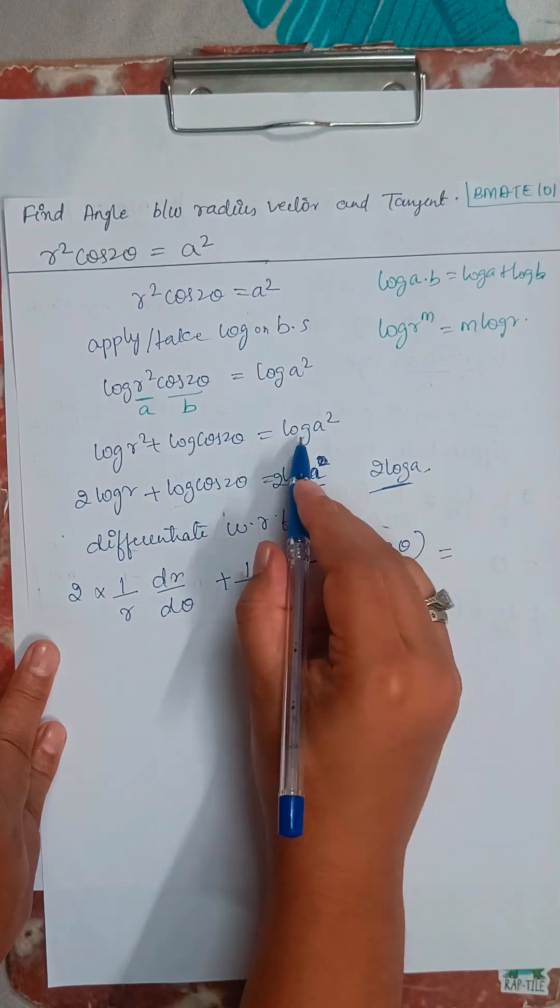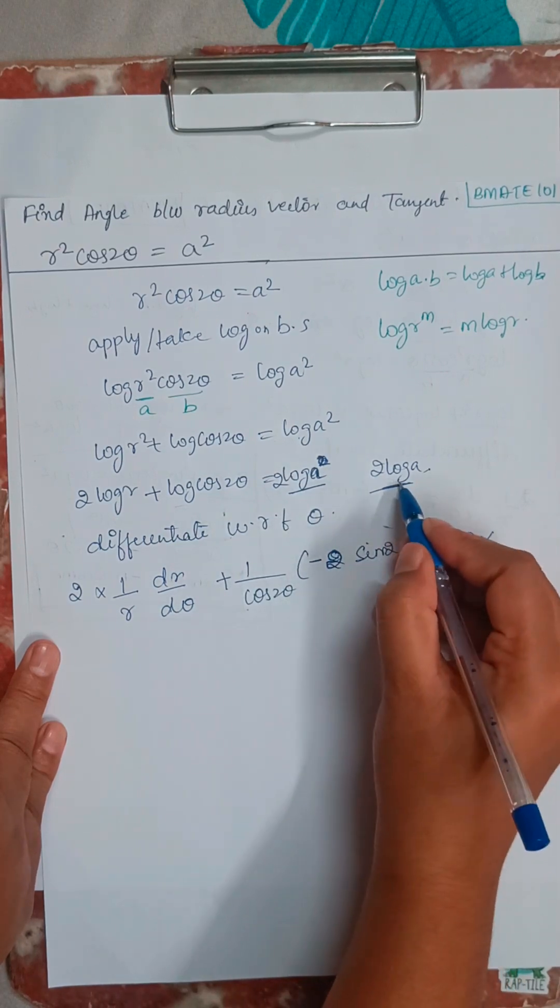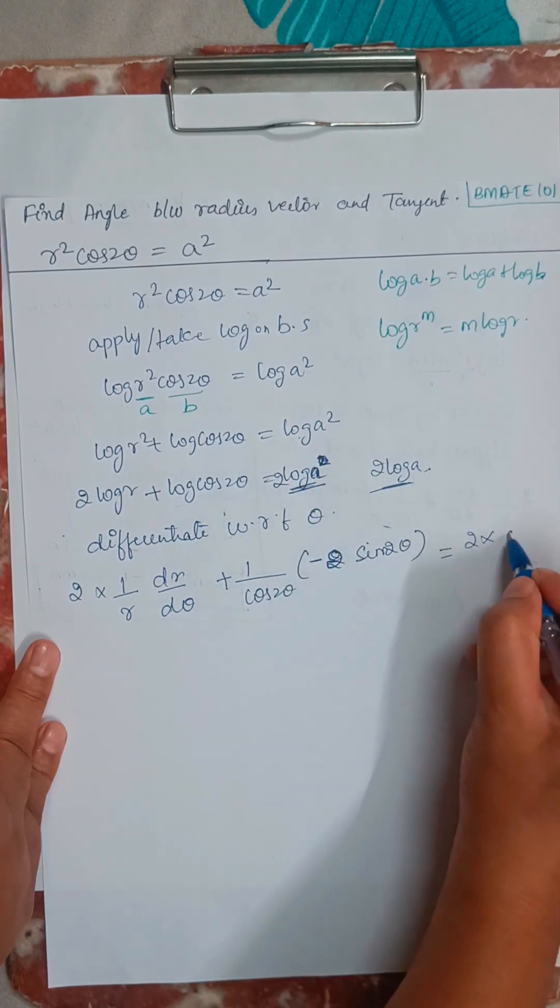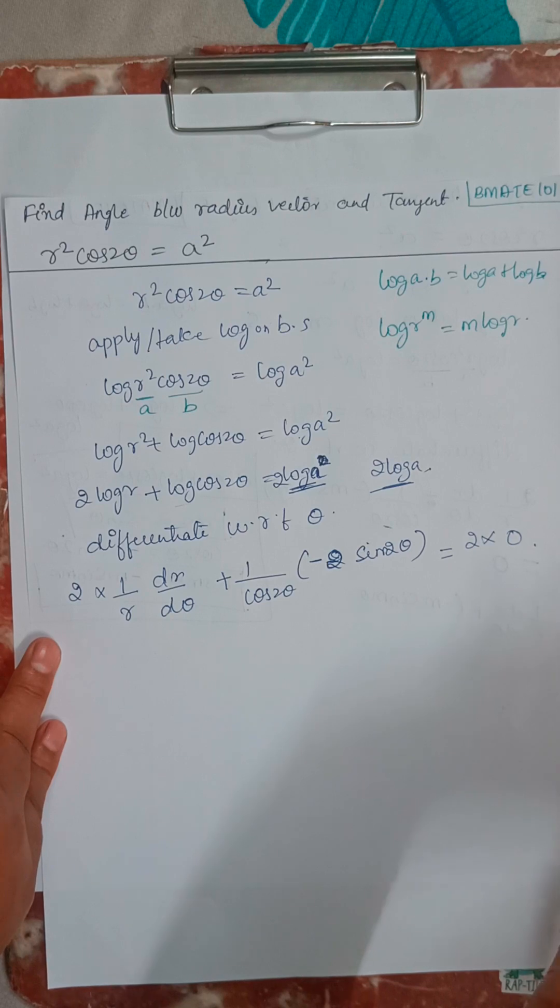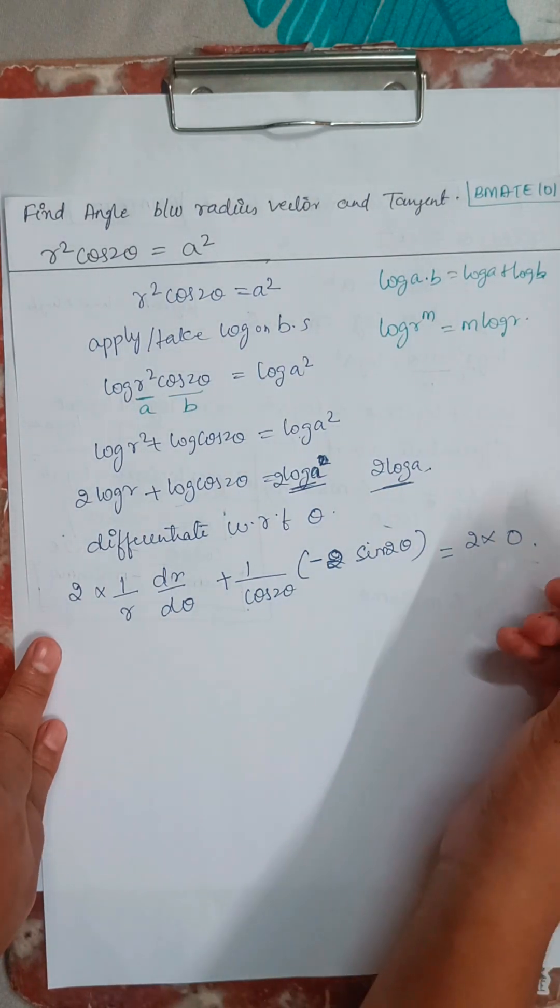Which equals 2 times log a. For this, it is 0. Differentiation of log constant is 0.